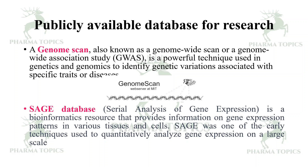A genome-wide scan, also known as a genome-wide association study (GWAS), is a powerful technique used in genetics and genomics to identify genetic variations associated with specific traits or diseases. The SAGE database is a bioinformatics resource that provides information on gene expression patterns in various tissues and cells; SAGE was one of the early techniques used to quantitatively analyze gene expression on a large scale.